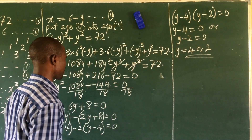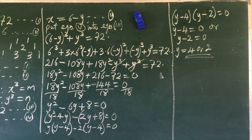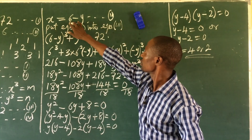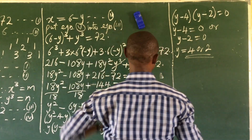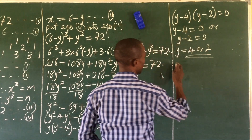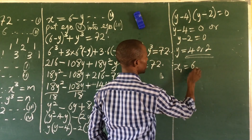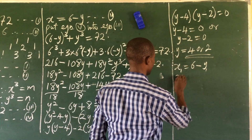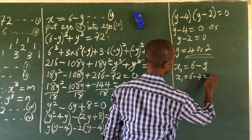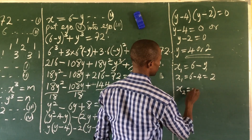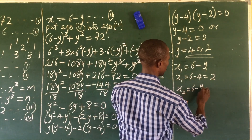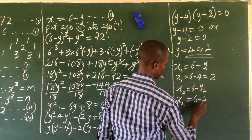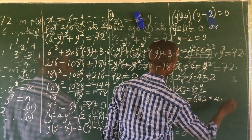Now that we have y, we find x using equation five: x = 6 − y. For y₁ = 4: x₁ = 6 − 4 = 2. For y₂ = 2: x₂ = 6 − 2 = 4.